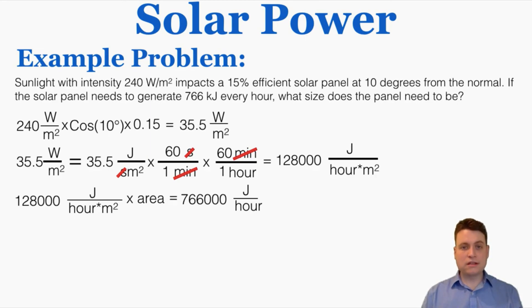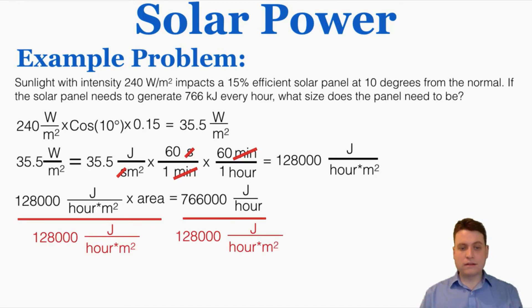One way to think about this is to see that the intensity has meters squared in the denominator, and our final answer of energy per hour does not have meters squared in the denominator. So we're going to have to multiply it by something that has meters squared in the numerator and nothing else, and that is a measurement of area. So dividing this out and solving for the area by itself gets me six meters squared. So if we have this much sunlight coming in with this angle and this efficiency, and we want to get this much energy out in an hour, it's going to take about six meters squared of solar panel to get that much energy.